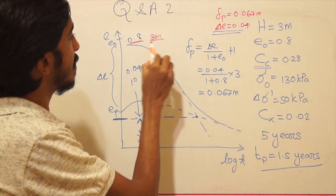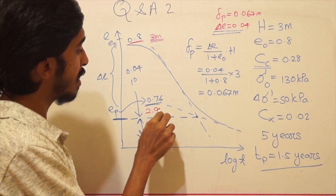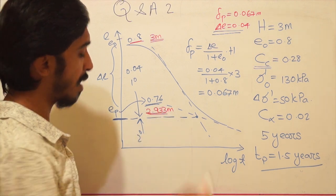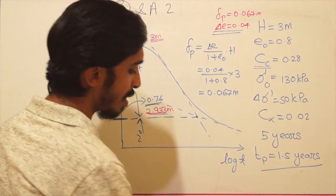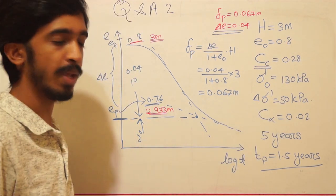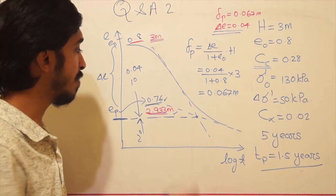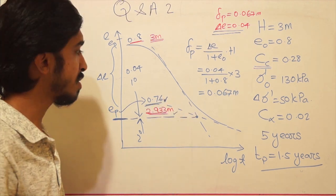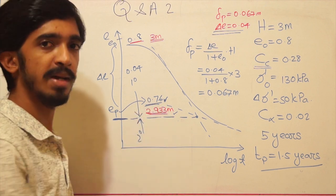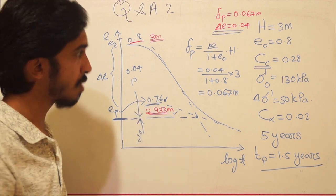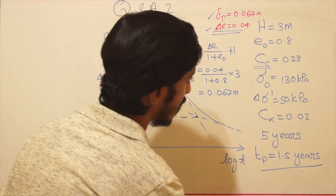When loading started the layer was 3 meters high. After primary consolidation ends, the layer height becomes 3 − 0.067 = 2.933 meters. This 2.933 meters is the initial height for secondary consolidation, and ep = 0.76 is the starting void ratio. The conditions have changed from the original e0 = 0.8 and H = 3m; now the primary consolidation is complete and the secondary consolidation portion remains.